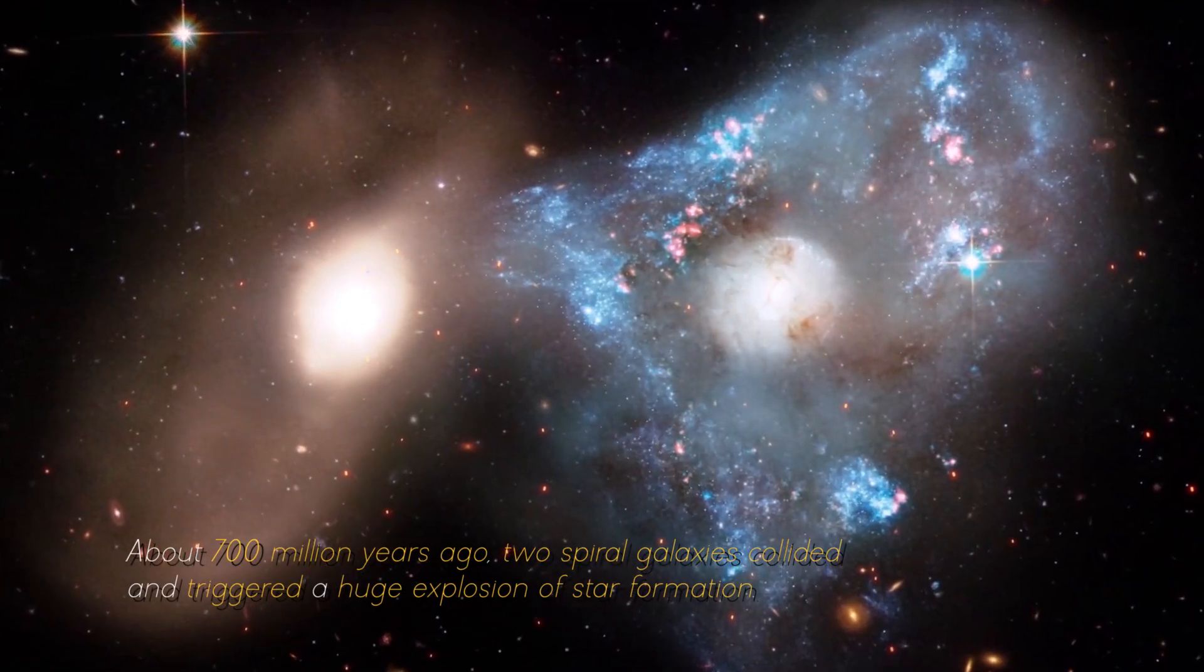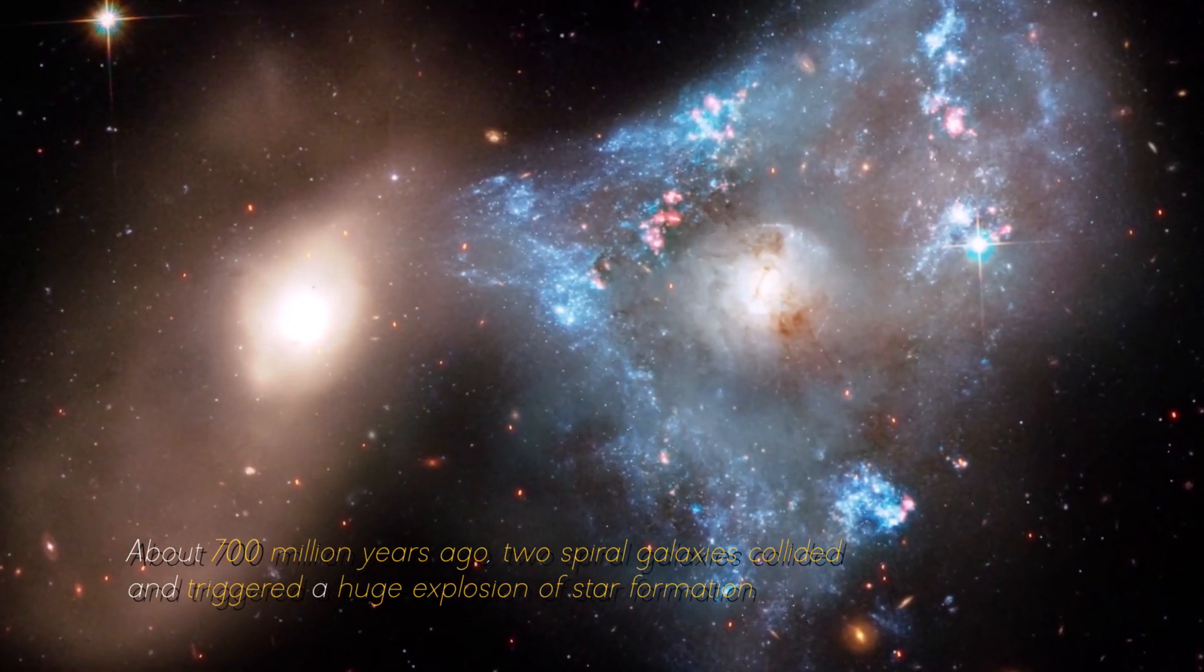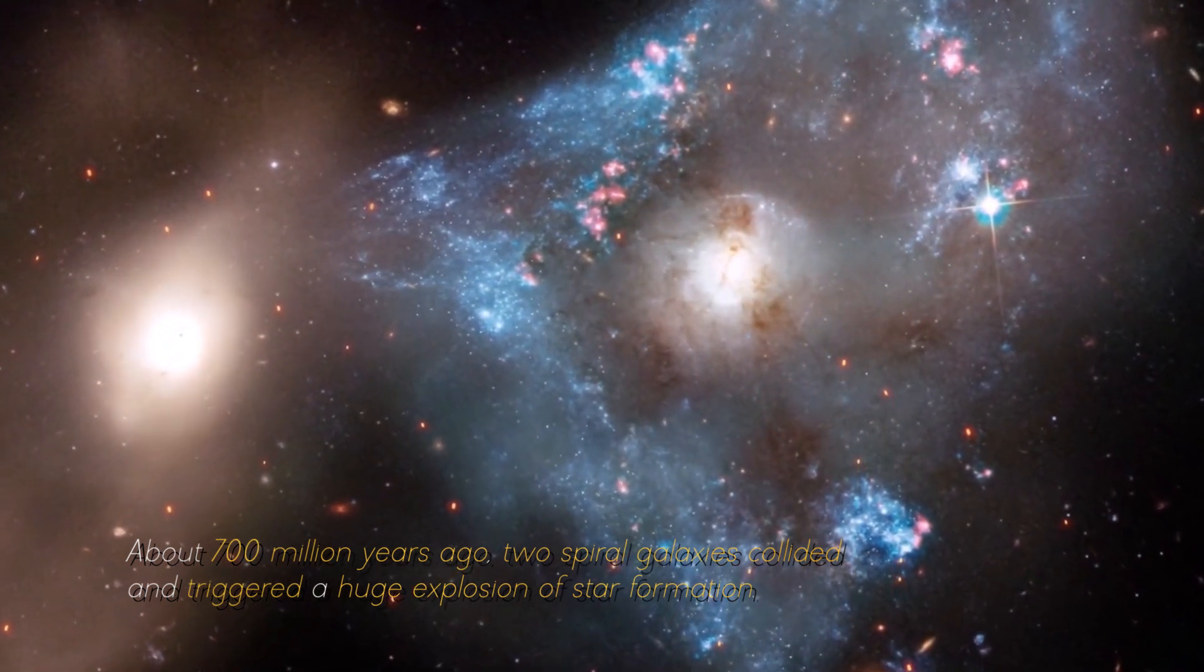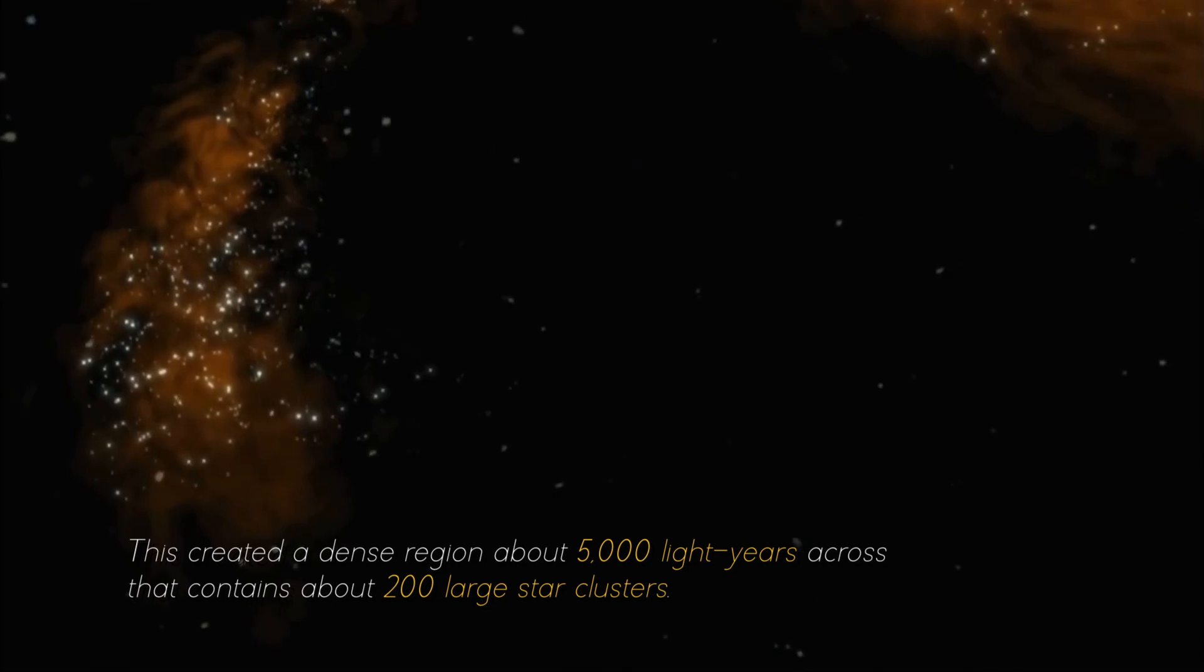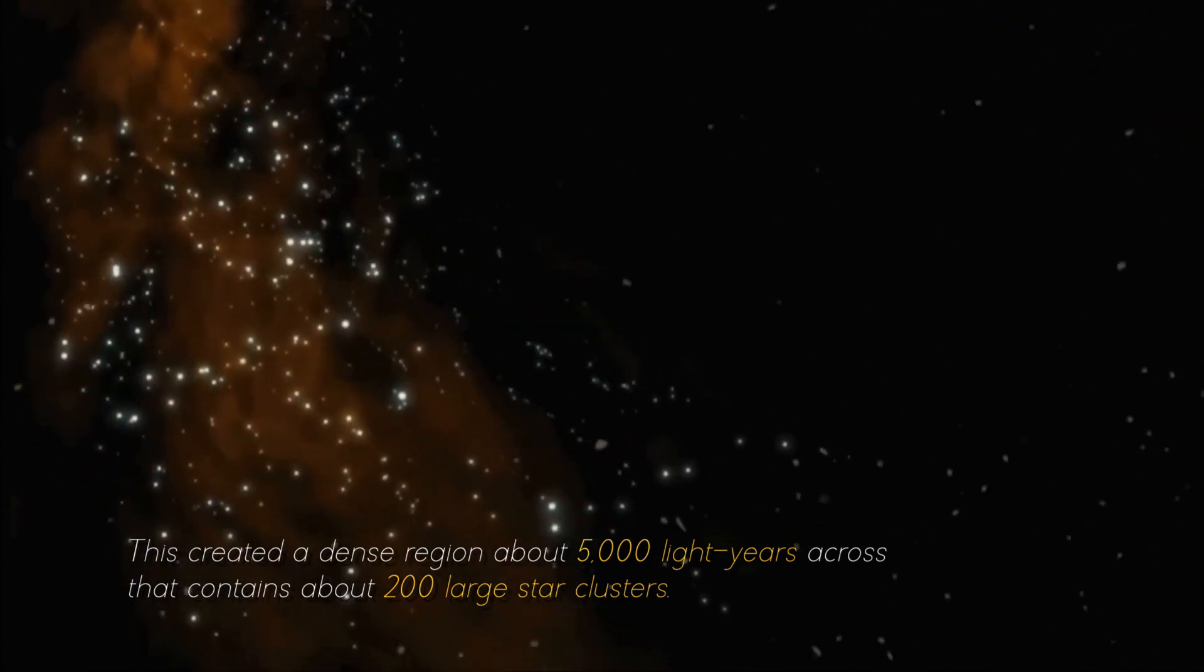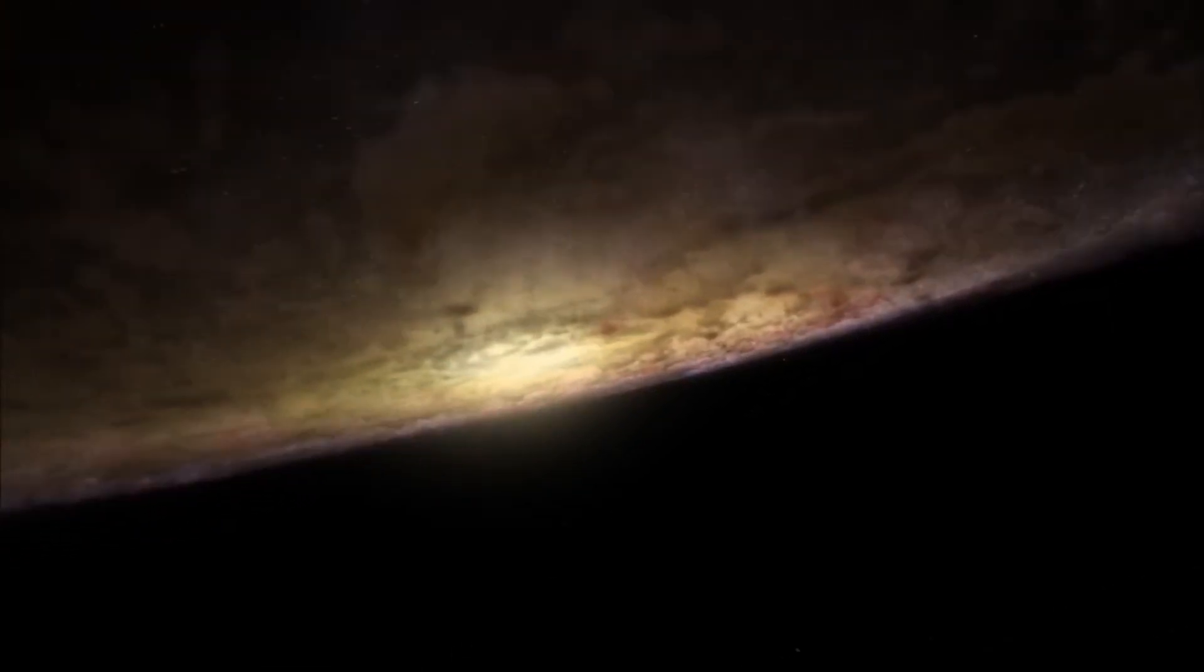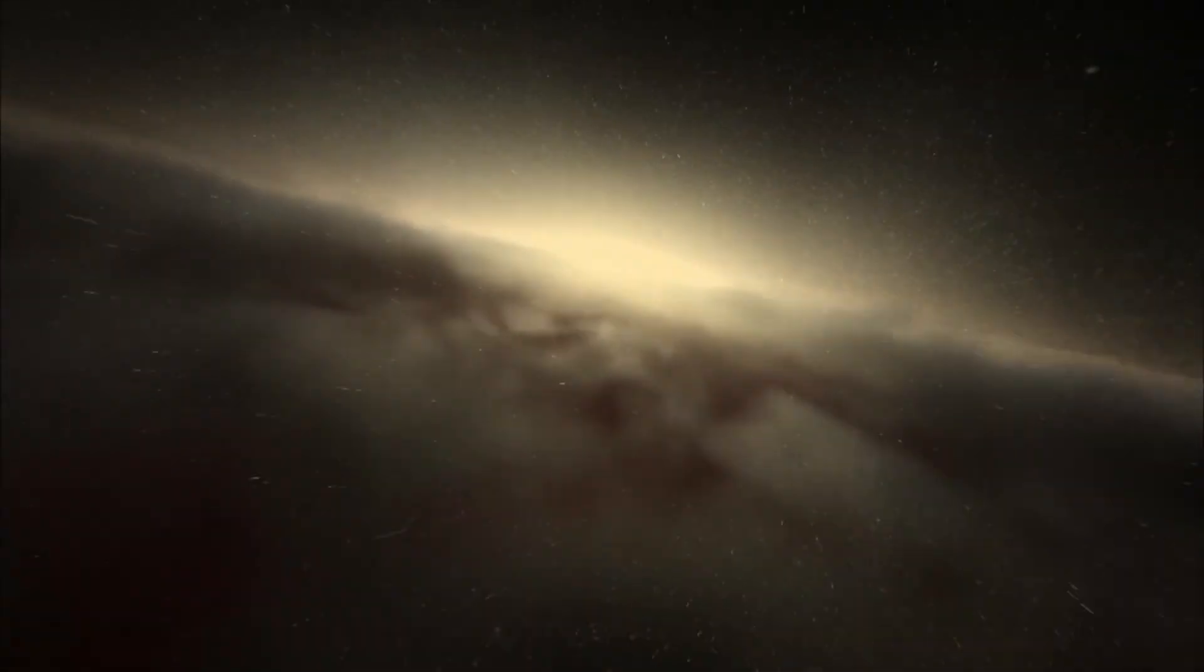About 700 million years ago, two spiral galaxies collided and triggered a huge explosion of star formation. This created a dense region about 5,000 light years across that contains about 200 large star clusters. Surprisingly, this small area contains as much gas as the entire Milky Way.